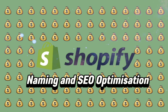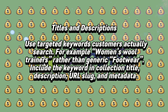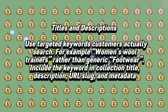Naming, SEO, and Optimization. Titles and descriptions: use targeted keywords customers actually search, for example 'women's wool trainers' rather than the generic 'footwear.' Include the keyword in the collection title, description, URL slug, and metadata.